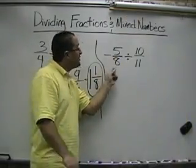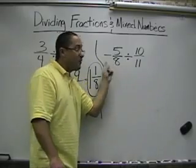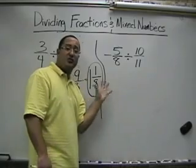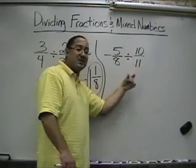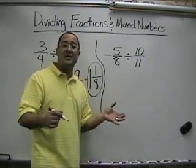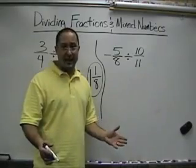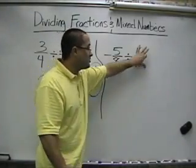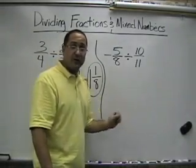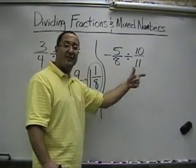Now let's look at this problem: negative 5/8 divided by 10/11. This is a negative and a positive — we have to pay attention to our integer rules. A negative divided by a positive equals negative, so we know our answer is going to be negative. In multiplying and dividing integers, different signs always equal negative. First, we find the reciprocal of our second fraction. So 10 over 11 becomes 11 over 10.